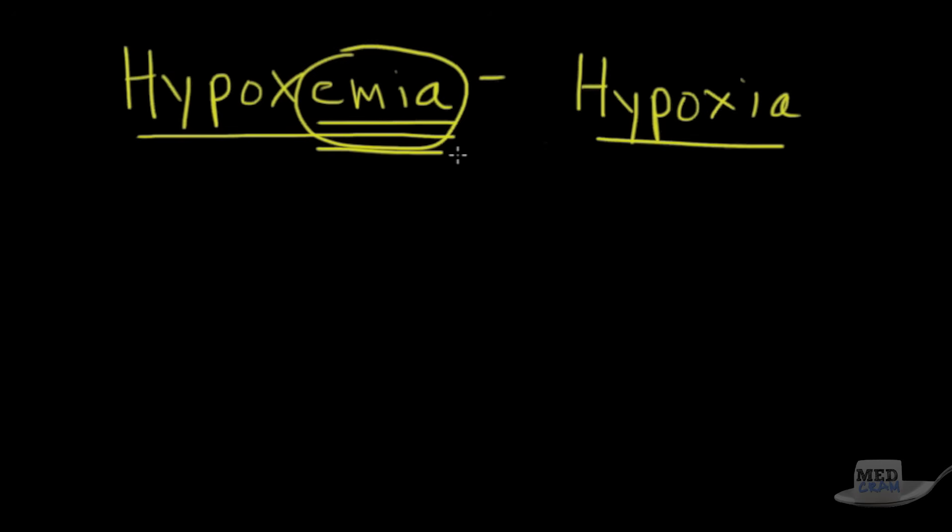So what are the reasons why you might have a low oxygen concentration in the blood? Well, there's five different mechanisms for that, and they lend themselves to five different answers on a test, which is why this is very highly testable stuff, and we want to go over it.